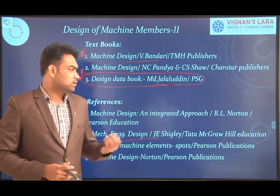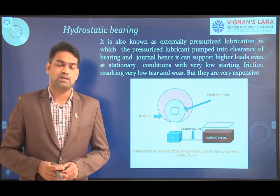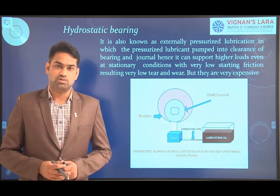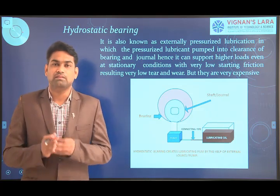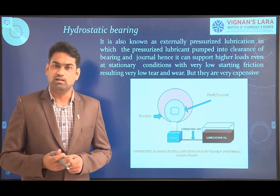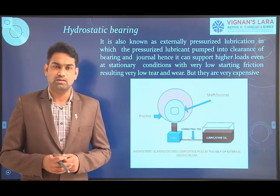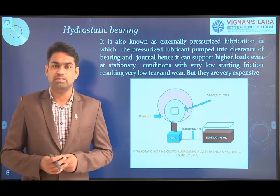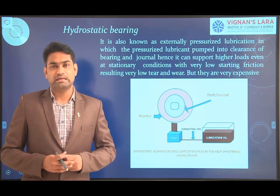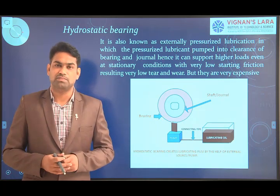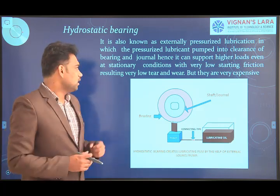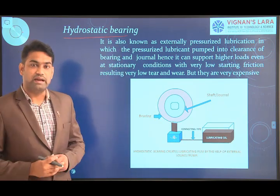Coming to the next topic — hydrostatic bearings. In the hydrodynamic type, the lubricant thin film is formed only due to the rotation of the journal. We saw three different stages: at rest, the shaft is in direct metal-to-metal contact with the bearing surface; at slow speed it forms a thin film operating under boundary lubrication; and beyond boundary lubrication, the thick layer of lubricant is formed by the rotation of the journal through a wedging action between the surfaces.